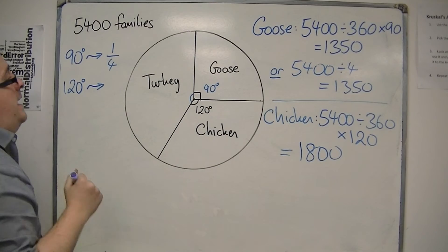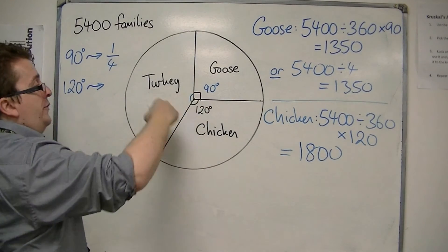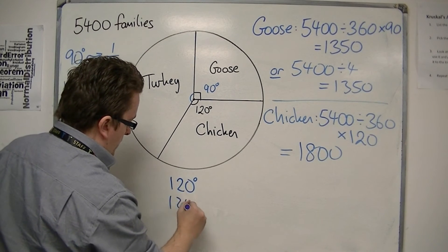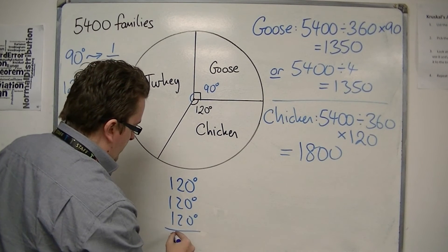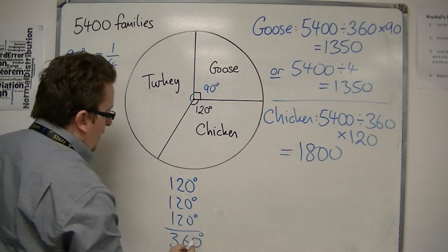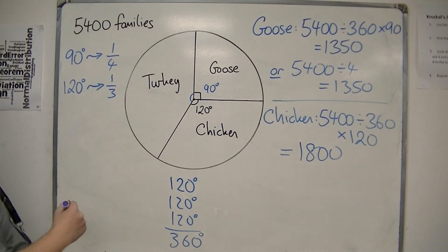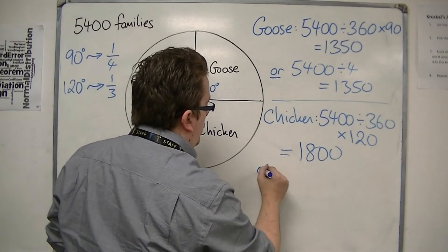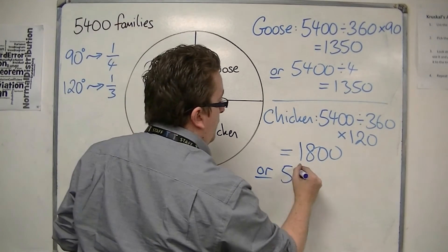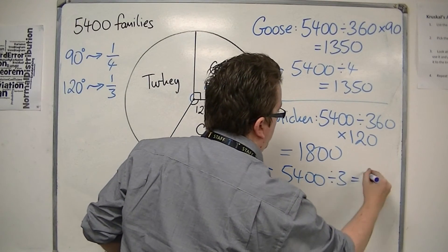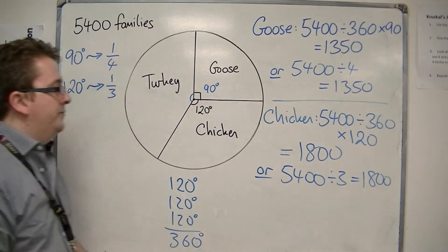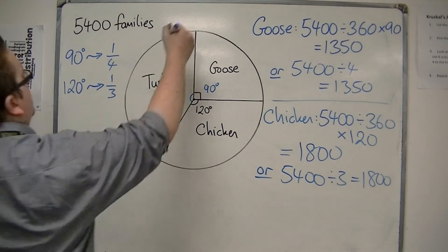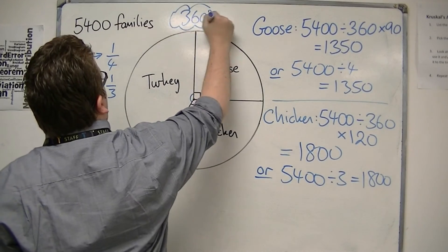120 degrees is also an angle where it's useful to know what fraction it is of the pie. There are 360 degrees around the point, and 120 degrees goes into 360 three times, so 120 degrees is one third of the pie. So we could have calculated this by doing 5,400 divided by 3 to get the same answer. 360 degrees is the magic number to remember here.